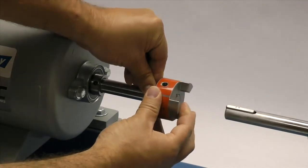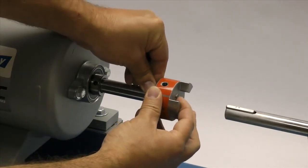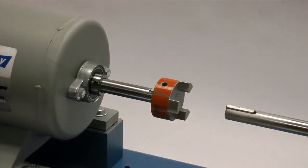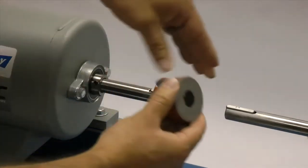Please note that the Lovejoy jaw coupling hubs are manufactured with a clearance or slip fit and hubs should slide onto the shafts with little or no difficulty.